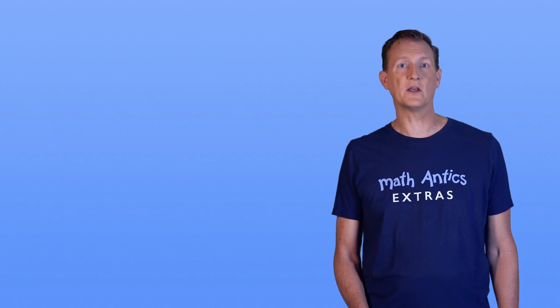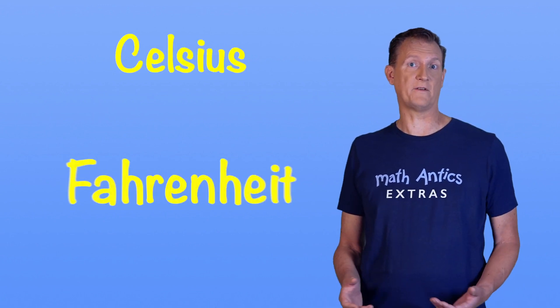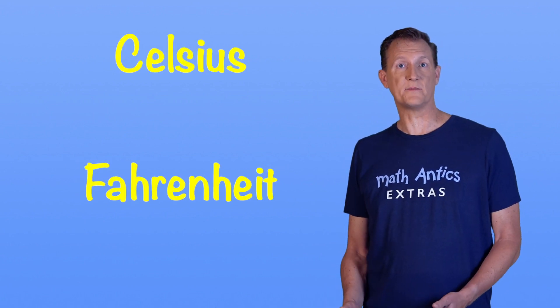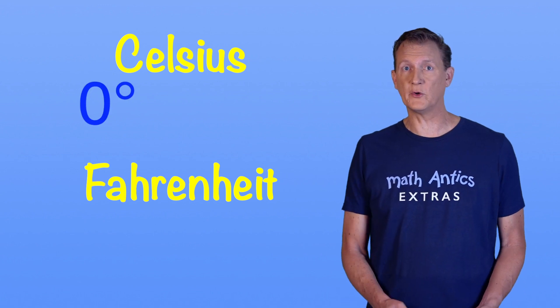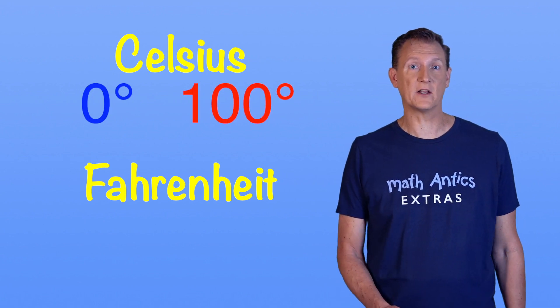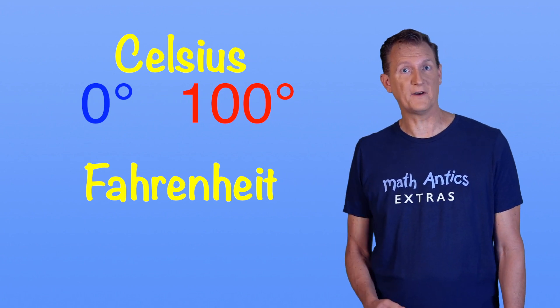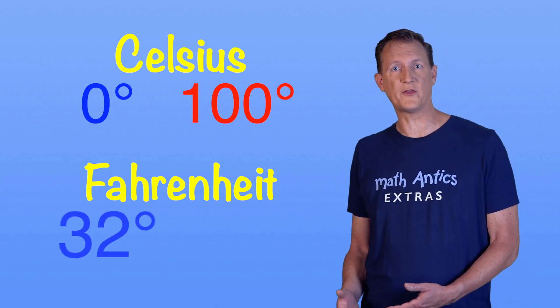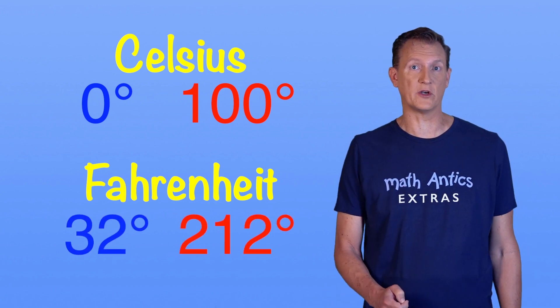The two most common scales of temperature are called Celsius and Fahrenheit. The Celsius scale is based on water. Water freezes at 0 degrees Celsius, and it boils at 100 degrees Celsius. The Fahrenheit scale is a little more complicated. In the Fahrenheit scale, water freezes at 32 degrees, and it boils at 212 degrees.